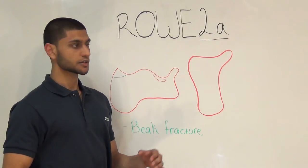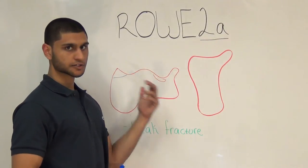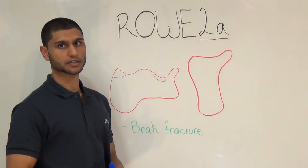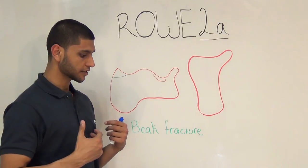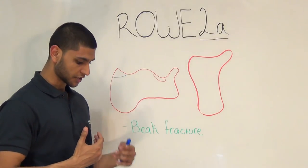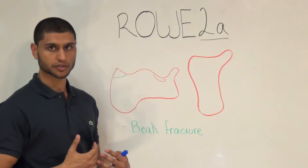Rowe 2a is a fracture of the most posterior and superior surface of the calcaneus. It is often referred to as a beak fracture. The patient will land on his or her heel with the knee extended and the foot dorsiflexed.